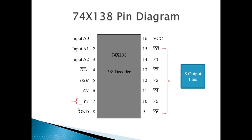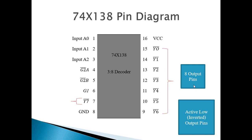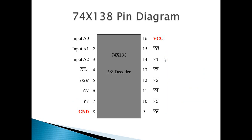Then we have Y0 to Y7 as 8 output pins. As already discussed, these are active low output pins — meaning inverted output pins. So in normal decoder operation when you apply 000 at the input lines, Y0 output will be 1 and rest all are 0. But here, as they are inverted active low outputs, Y0 will be 0 and rest all are 1. That is the only difference — you get the inverted output. We also have pin number 8 and 16 as ground and VCC for the power supply.